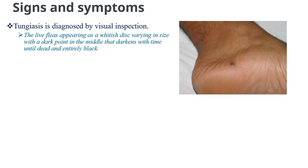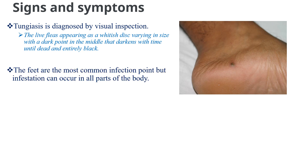When you see the signs and symptoms of tungiasis, tungiasis is diagnosed by visual inspection. The lesion appears as a whitish disc, increasing in size with a dark point in the middle that darkens with time and ends entirely black, as you see on the image. The feet are the most common infection point, but infestation can occur in all parts of the body.